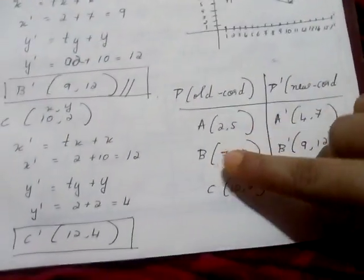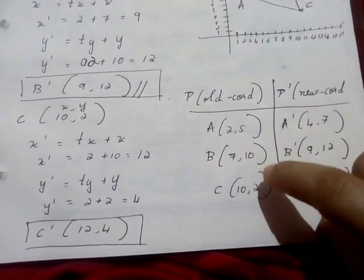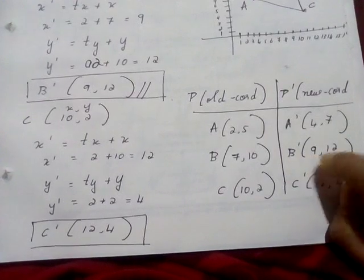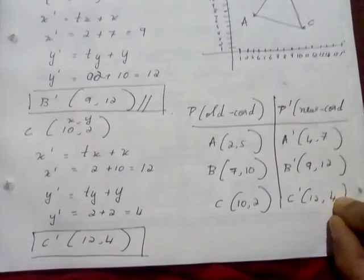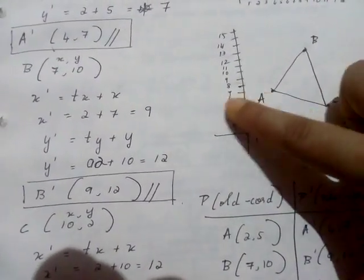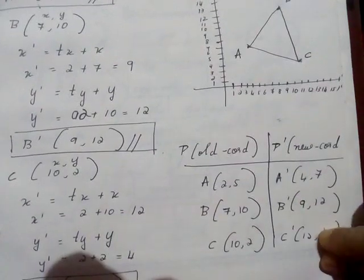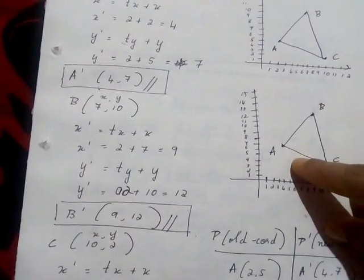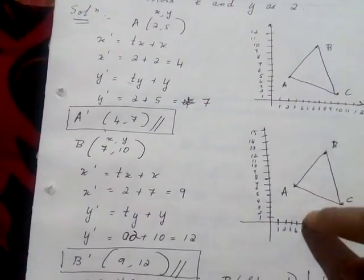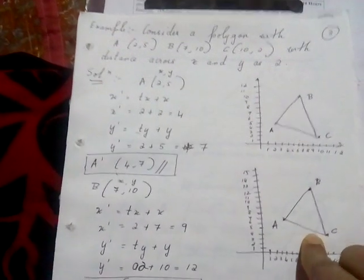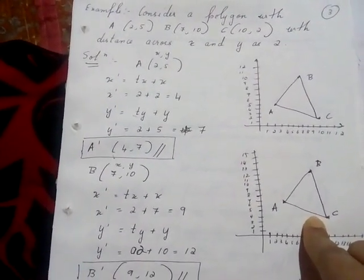The old coordinates were A(2, 5), B(7, 10), and C(10, 2). The new coordinates are A-dash(4, 7), B-dash(9, 12), and C-dash(12, 4). I have drawn the new polygon on the diagram — it has just moved a bit upward. Only the coordinate positions have changed. This was two-dimensional translation along with an example.